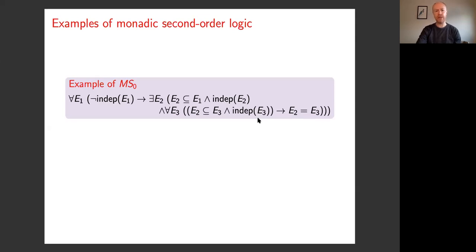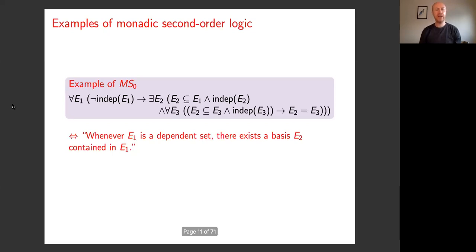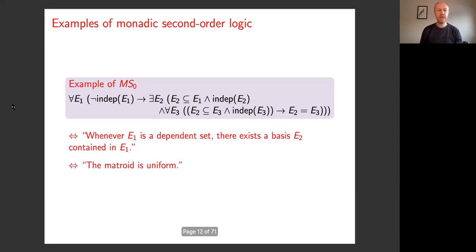So if you wanted to translate this into human language, it would say something like: whenever E1 is a dependent set, then it contains a set E2 such that E2 is a basis. That's what it says about matroids, and I'm sure lots of people will be able to tell me what class of matroids I'm now describing. Uniform. So this sentence is describing the class of uniform matroids — that property holds in a class of matroids if and only if it's the class of uniform matroids. What we've just seen is that there is a sentence in MSO which defines the class of uniform matroids.